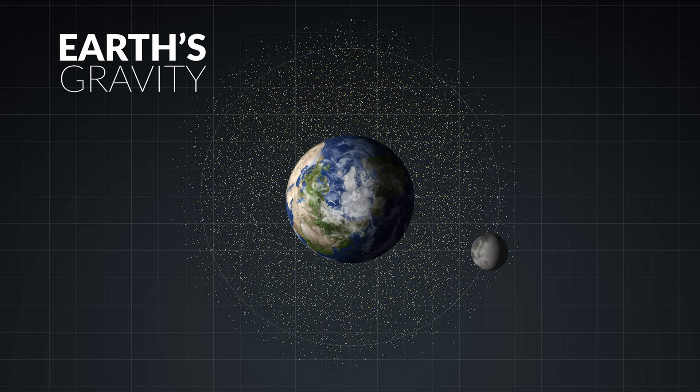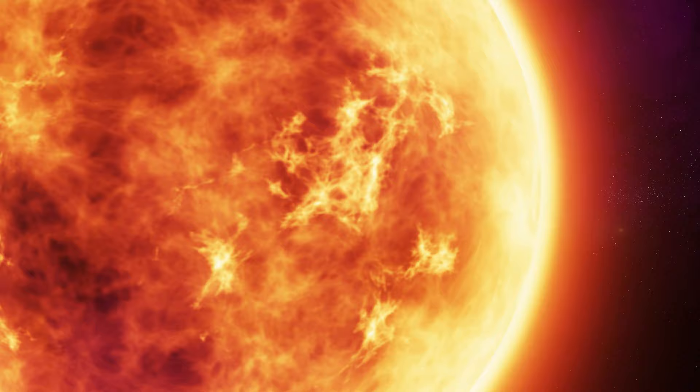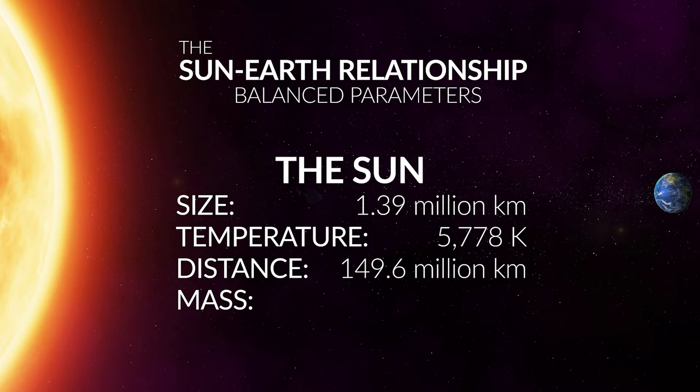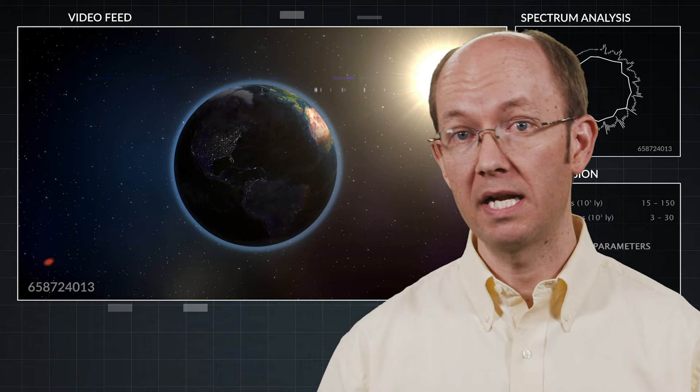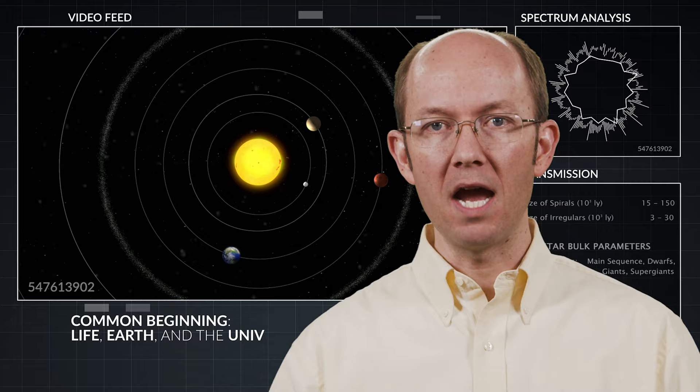Life exists within the precise arrangement of Earth's cycles, which only exists within the precise arrangement of the Sun, Earth, and Moon system, which only exists within the precise order of the universe's laws. The timing for the creation of life and planet Earth was synchronized from their beginning.